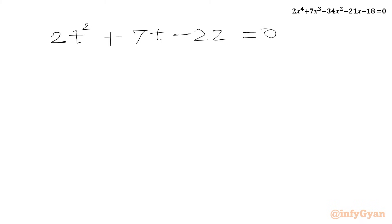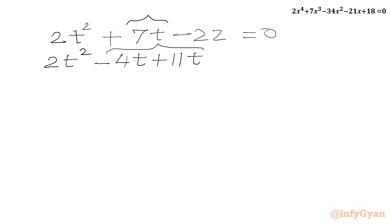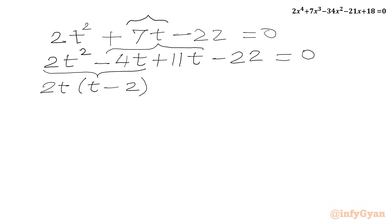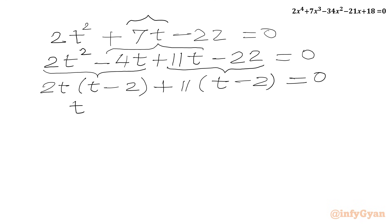Now we solve 2t² + 7t - 22 = 0 using factorization. We split 7t as 11t - 4t: 2t² - 4t + 11t - 22 = 0. Taking 2t common from the first two terms gives 2t(t - 2), and taking 11 common from the last two terms gives 11(t - 2). So we get (t - 2)(2t + 11) = 0.